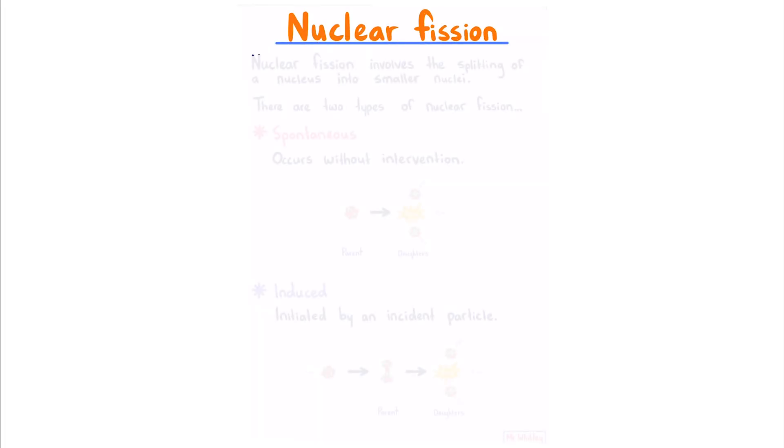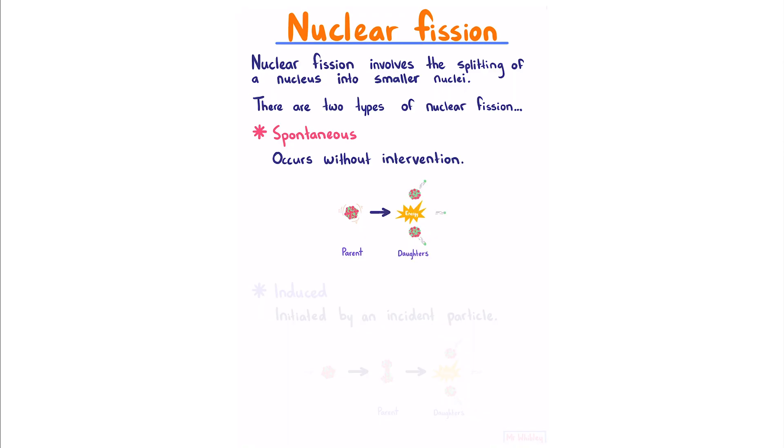Nuclear fission: Nuclear fission involves the splitting of a nucleus into smaller nuclei. There are two types of nuclear fission. Spontaneous, which occurs without intervention, where an unstable parent nuclei spontaneously decays into its daughter products. Induced is initiated by an incident particle. So if we have a stable nucleus and fire a particle at it, the resulting nucleus splits into our daughter products, similar to before. Once again the difference is the incident particle.